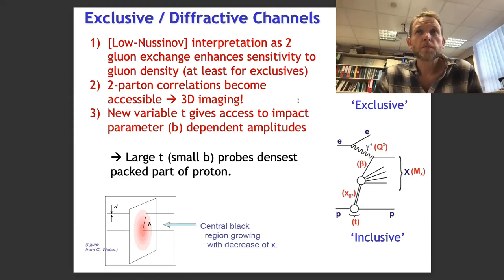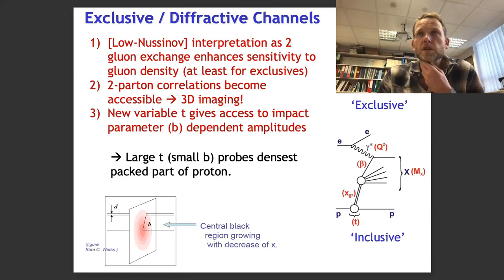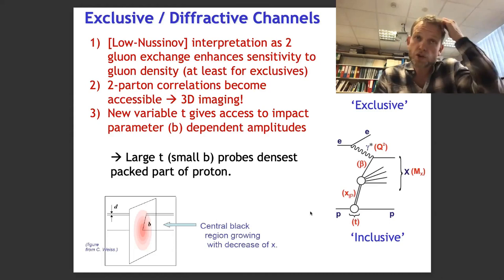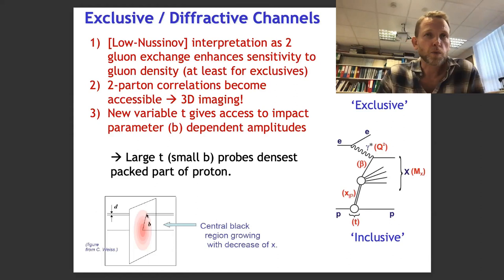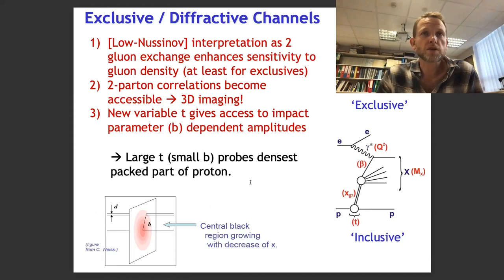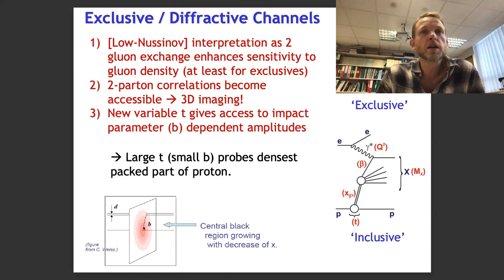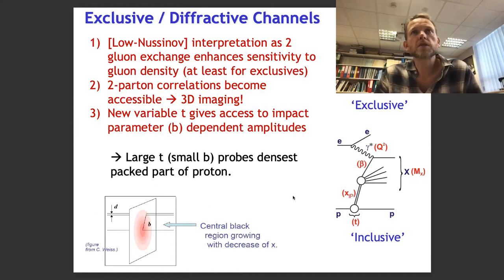The third reason, much more to do with saturation, is that there is another kinematic variable — the momentum transfer squared of the proton vertex, t — which is conjugate to the impact parameter. By impact parameter, I mean the relative distance from the centre of the proton to where the probe comes in. The bigger the impact parameter, the smaller t is, and vice versa. So by scanning this t variable, you can effectively scan the transverse dimension in the target. For example, if there's a dense area in the middle, you might be able to see that in particular regions.